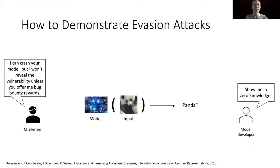Adversarial machine learning has drawn more and more attention, and the interesting problem is how to demonstrate evasion attacks. For example, here we have a model developer that develops a model for image classification — it takes an input image and outputs a label. It also has a bug bounty program to award anyone who finds a bug in this model. We have a challenger, who might be a white-hat hacker, that finds a bug. They say: I can crash your model, but I won't reveal the vulnerability unless you offer me bug bounty rewards. How do they deal with this conflict?